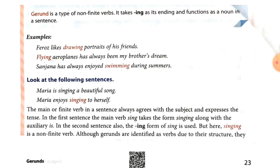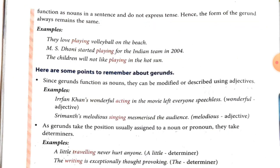But in the second sentence, singing is a gerund because it comes after the main verb enjoys, and it plays the role of object — it is a noun here. Although gerunds are identified as verbs due to their structure, they function as nouns in a sentence and do not express tense. Hence, the form of a gerund always remains the same.